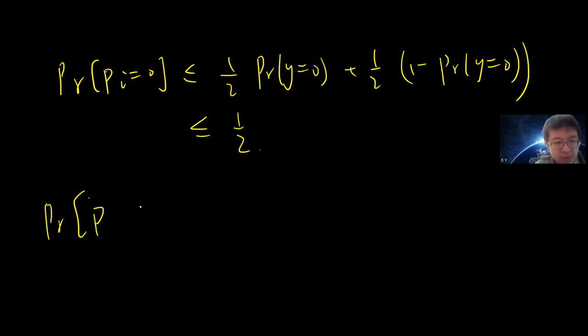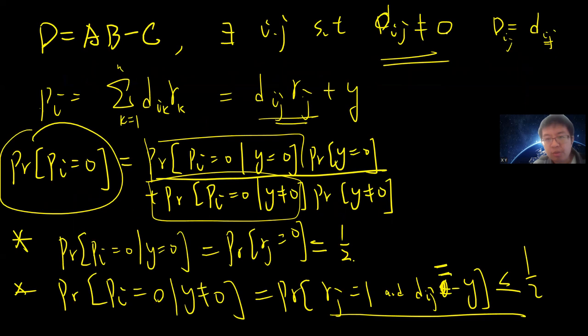And the probability of P equals 0 is less or equal to probability of P_i equals 0, because the probability of P equals 0 means that all the P_i from i=1 to n must be 0. But now I already proved that the single term is less than half. So if there is a D_ij which is non-zero, then the probability of P equals 0 is less or equal to half.